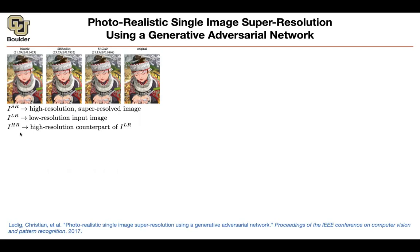The cool thing about super resolution is that you can generate as many data as you want. How? You take a high resolution image — this is your original image — you push it through a Gaussian filter, which is going to make things blurry, and then you downsample. Rather than saving all of the pixels, you're going to subsample your pixels and downsample by a factor of R — by a factor of two, three, four, et cetera. That's going to give you a lot of data. As soon as you know your high resolution image, you can generate the low resolution image on the fly.